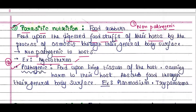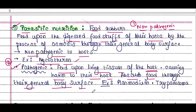The other type of parasitic nutrition involves pathogenic protozoa. They also depend on the host, but they feed upon the living tissues of the host and hence cause harm to their host. They absorb food through their general body surface. This type of protozoa includes Plasmodium, Trypanosoma, and others.